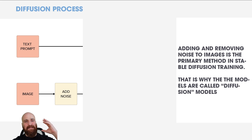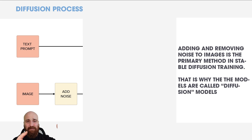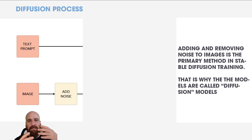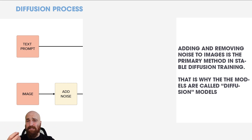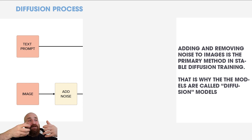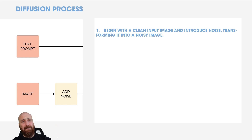Adding and removing noise to images is the primary method in Stable Diffusion training. The system adds noise to an image, then tries to figure out what noise was added, and then removes it to recover the original picture. That's why in an image-to-image system, if you put in a cat image, you get a cat image back that looks similar but slightly different — the system adds noise to obscure the original, then removes it because it already knows what a cat is.